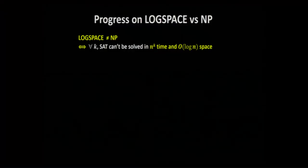When memory is really bounded, you can prove interesting lower bounds on computation. Log space different from NP is equivalent, via the Cook-Levin theorem, to the statement that for all constants k, SAT can't be solved in n-to-the-k time and order log n space. A complete resolution would require proving this for all k. What they showed is that there are constants k greater than one for which you can prove this kind of statement — some non-trivial polynomial lower bounds.